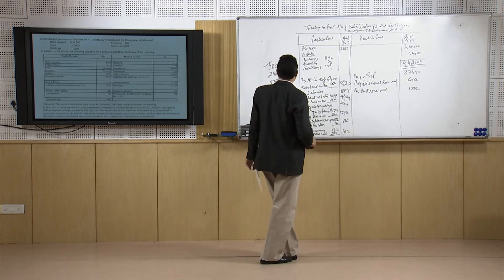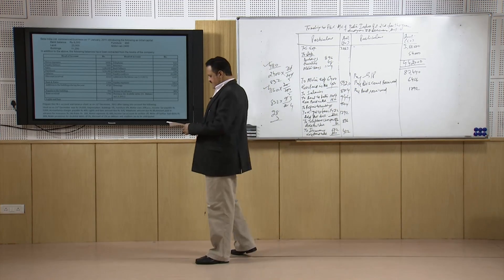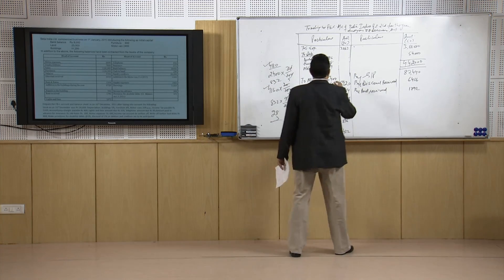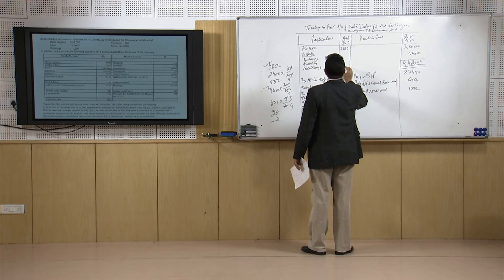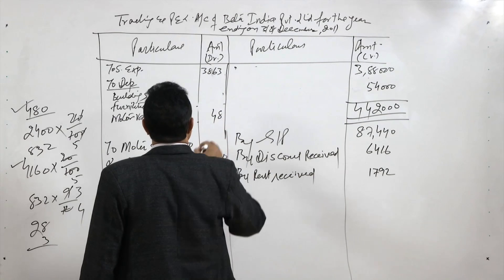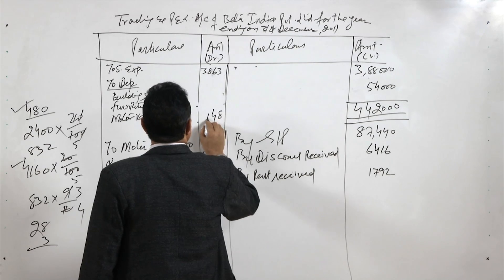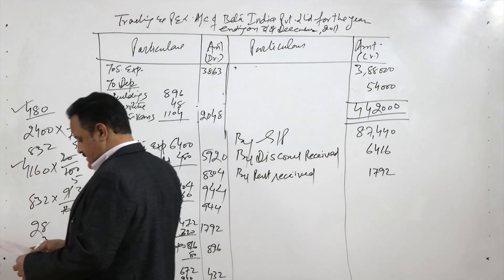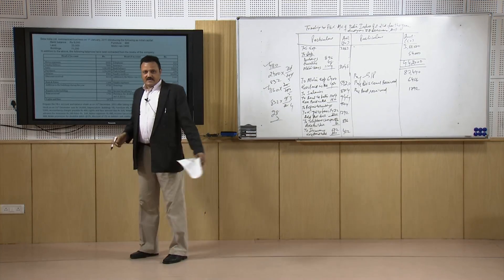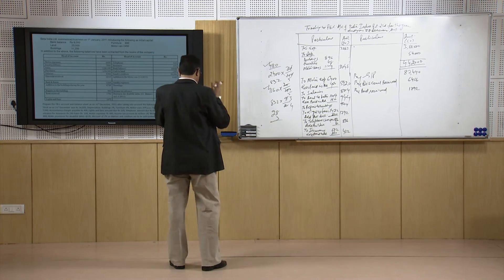So total depreciation is 480 plus 624, which is 1,104 for the motor van. The total balance of depreciation across all three important assets — buildings, furniture, and motor vans — is 896 plus 48 plus 1,104, which equals 2,048 rupees.